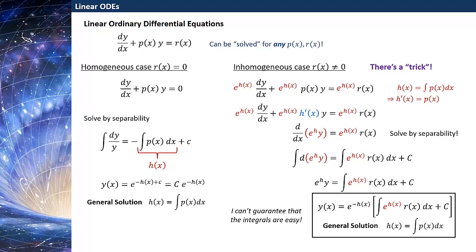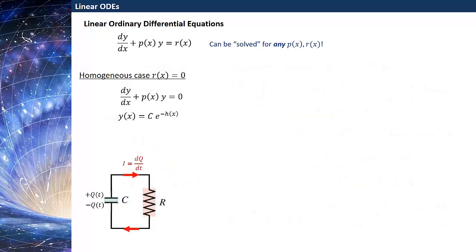I just want to talk about the interpretation of these two solutions and try to get some intuition for what's happening here. Let's start with the homogeneous case. In the homogeneous case we had r(x) equals zero, and so we had this rather simple looking solution y(x) equals C e to the minus h(x).